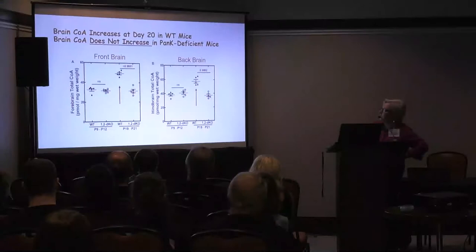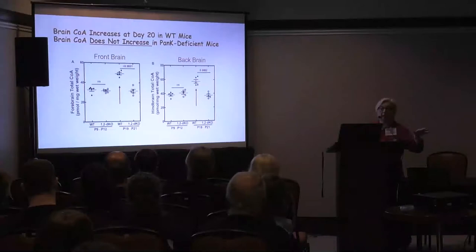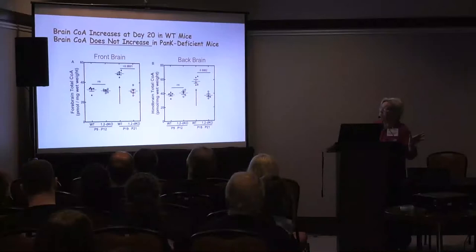In these mice, at the early time point, wild-type and knockout have the same CoA levels in the brain. But at the later time point, CoA levels increase in wild-type — it's part of their developmental program. In the mice with the PAN-K2 deletion, the CoA does not increase; it remains the same. This is why they're going into crisis — it is related to the level of CoA in the brain.